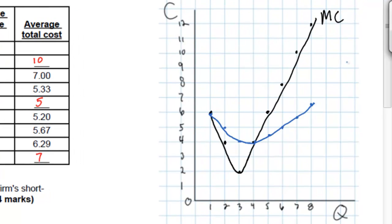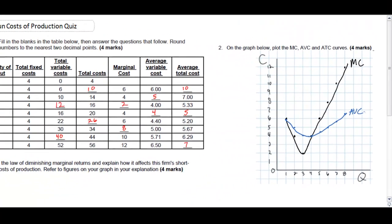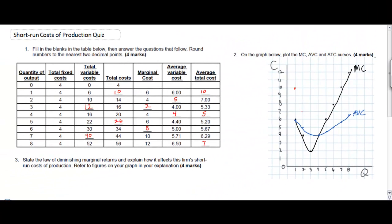Next we have the average variable cost which shows us the per unit wage costs of this firm. Notice that average variable cost slopes downwards until it intersects marginal cost and then it slopes upwards.